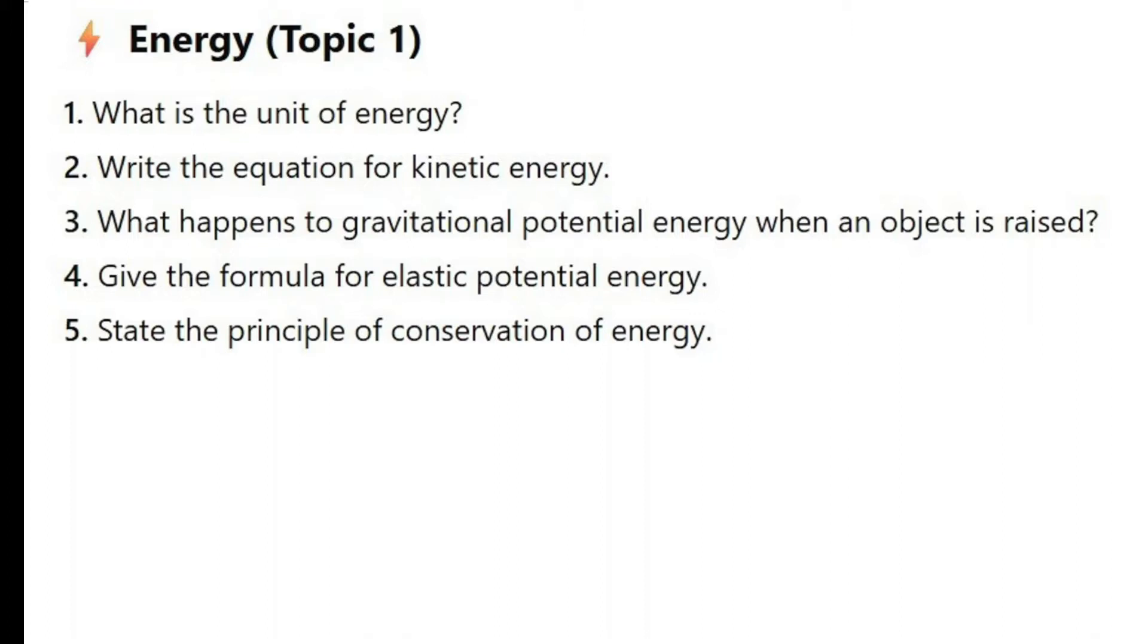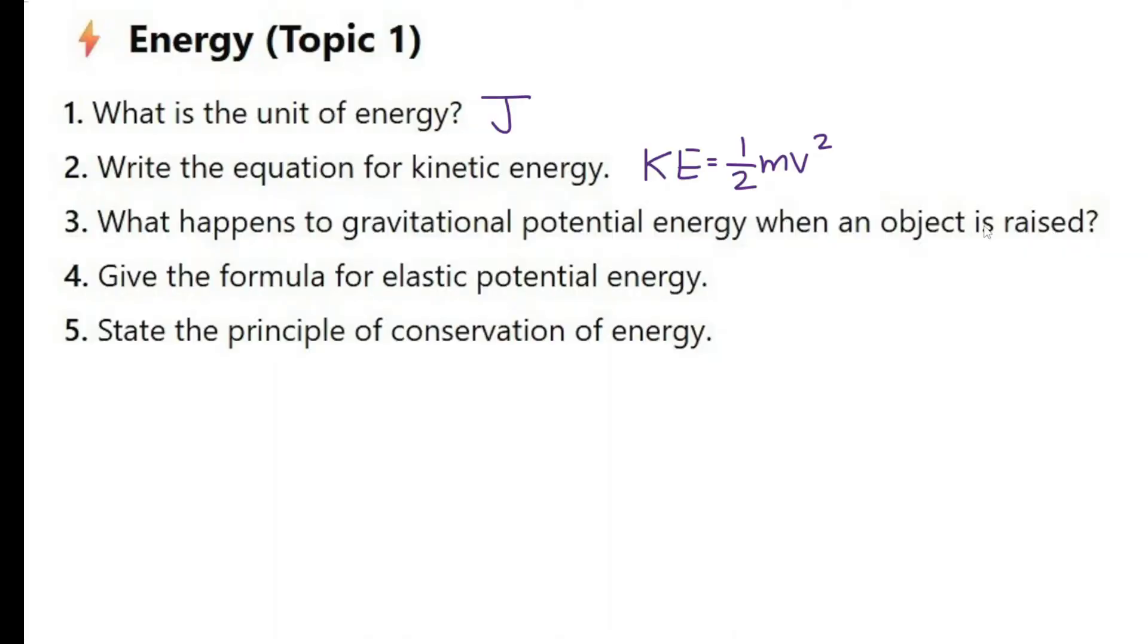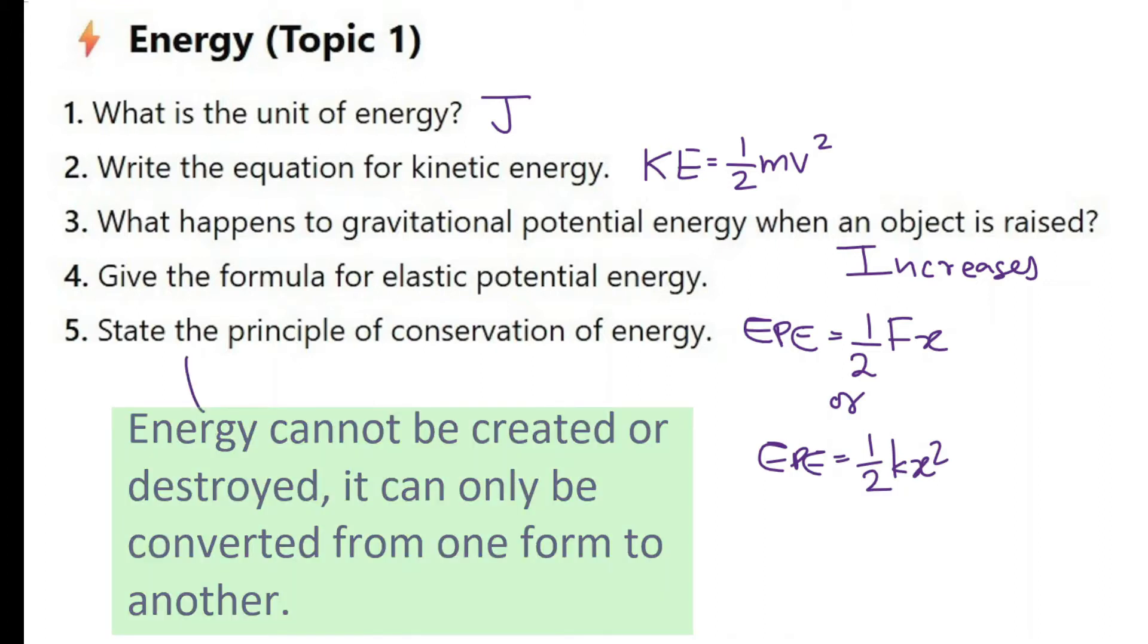The unit of energy is Joules, capital J. Write the equation for kinetic energy: kinetic energy is equal to half mv squared. What happens to GPE when an object is raised? It increases. The greater the height, the higher the GPE, it increases. Give the formula for elastic potential energy: EPE is equal to half kx squared. State the principle of conservation of energy. Energy cannot be created or destroyed. It can only be converted from one form to another.